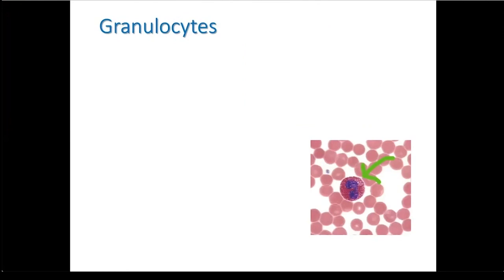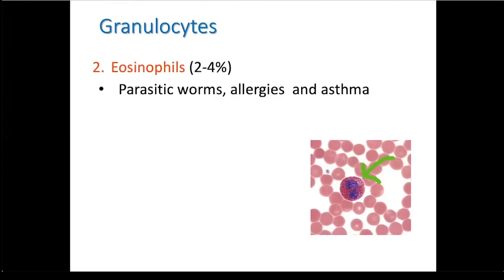A second type of granulocyte are the eosinophils that make up between two to four percent of the leukocytes. Their numbers are elevated during parasitic worm infections, allergies, and asthma. Their nucleus contains two lobes and the granules stain red.